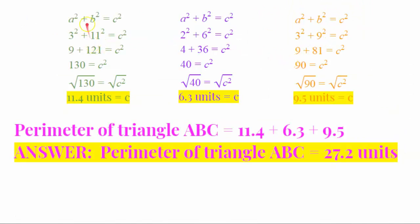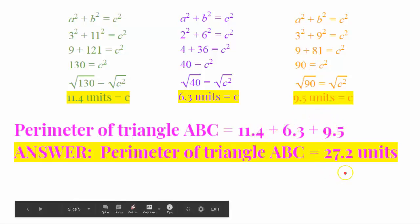So, new screen, just to show you, these are the math that I did to find the three sides of the triangle. The perimeter is the sum of all three of those sides. So, the sum of 11.4, 6.3, and 9.5 is 27.2 units. So, the final answer of the perimeter of the triangle is 27.2 units.